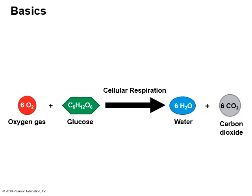Here is the basic equation. On the left we have the reactants, on the right we have the products. We take glucose — a simple sugar — and we take some oxygen, which is why we breathe oxygen; it's for this very purpose. What we produce is ATP, and as byproducts we produce some water and some carbon dioxide. Why we exhale carbon dioxide right now is because of this process, because of cellular respiration.